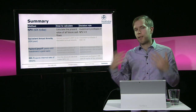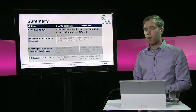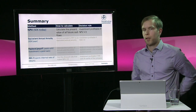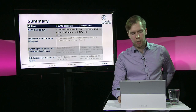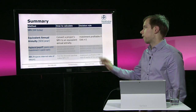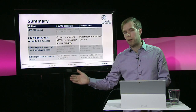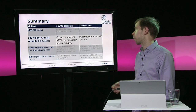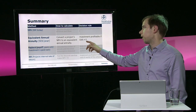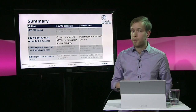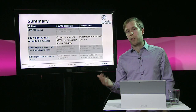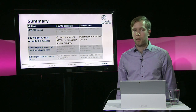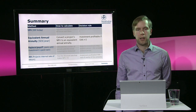So we've looked at NPV — always the benchmark — where you calculate the present value of all future cash flows and the investment is profitable if NPV is greater than zero. Today we looked at the equivalent annual annuity: you take the NPV, convert it to an equivalent annual annuity, and have a yearly surplus to compare between investments. For a single investment it's profitable if EAA is greater than zero; if comparing mutually exclusive investments that can be repeated, take the one with the highest equivalent annual annuity. That's it for this video — thank you very much.